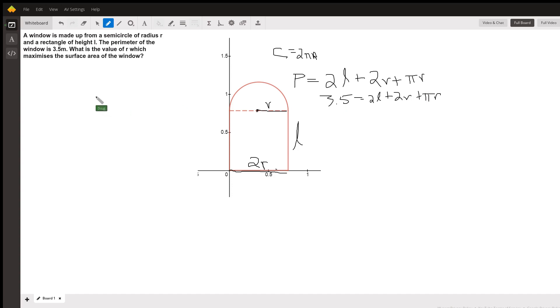Now, the function that we're trying to maximize is the surface area or the area of this window. And that can be represented by, well, the area of the rectangle is 2RL. And the area of the semicircle is half of πR², because the area of the semicircle is half of the area of the circle with radius R.